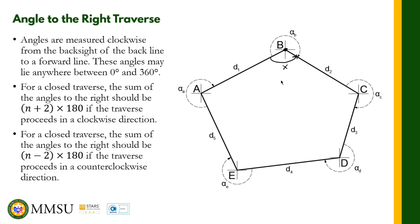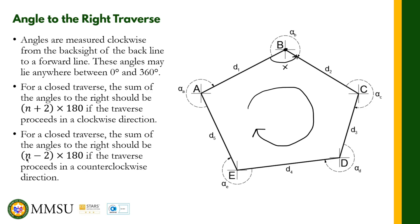For a closed traverse, the sum of the angles to the right should be (n+2) times 180 degrees if the traverse proceeds in the clockwise direction — meaning you go from A, B, C, D, E in that order. Otherwise, if you go counterclockwise — from A, E, D, C, B — this rule does not apply. Instead, the sum becomes (n-2) times 180 degrees, which is actually the formula for the sum of interior angles.